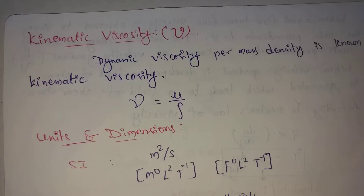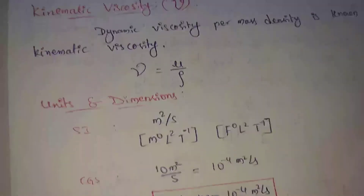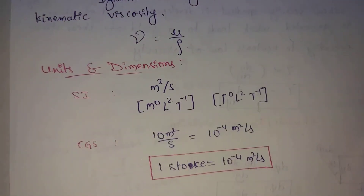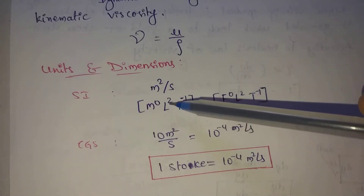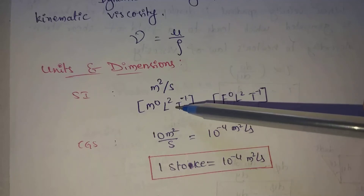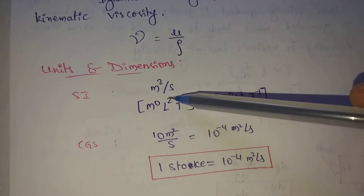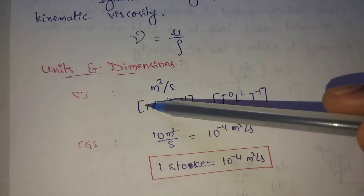Let's look at units in other dimensions. In SI units, kinematic viscosity is meter squared per second. Looking at the dimensions, M power 0 equals 1, so we have L squared, T to the power minus 1.